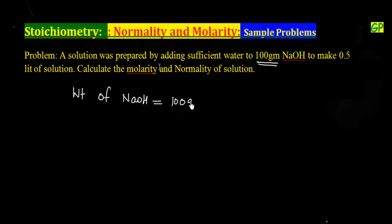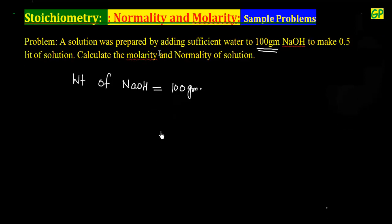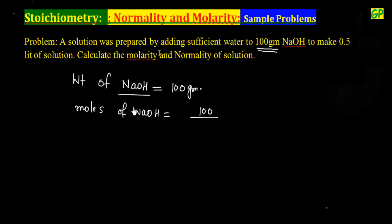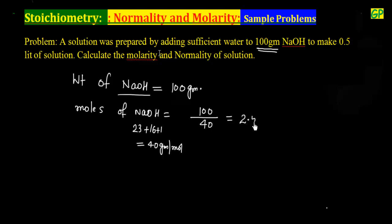We can calculate the moles of NaOH: moles = weight divided by molecular weight. The molecular weight of NaOH is 40 — calculated as 23 + 16 + 1 = 40 grams per mole. So moles of NaOH = 100 / 40 = 2.5 moles.